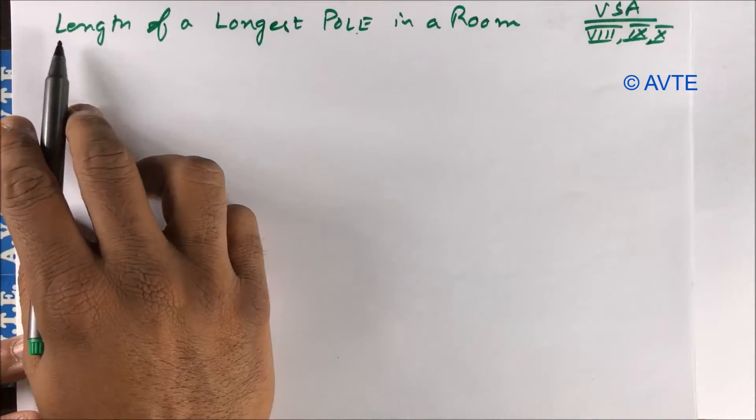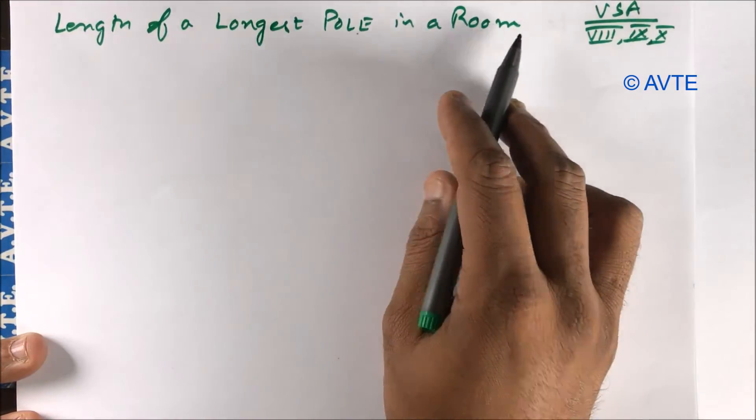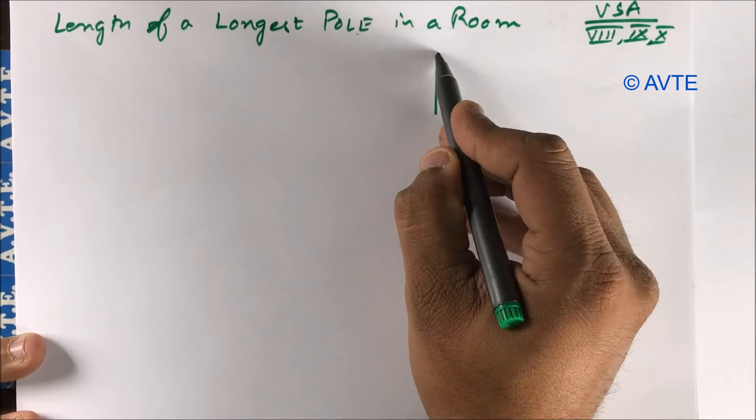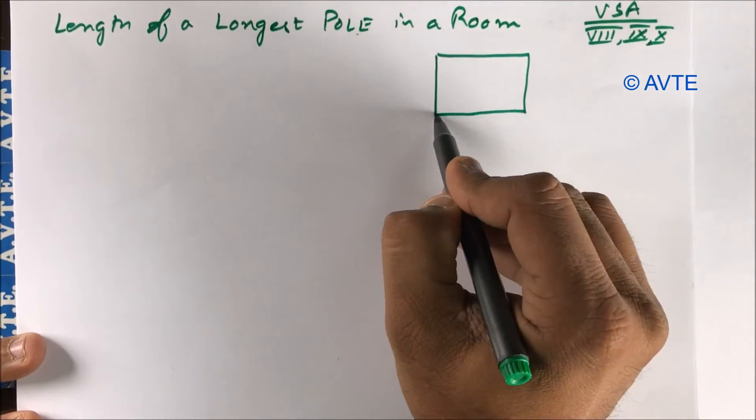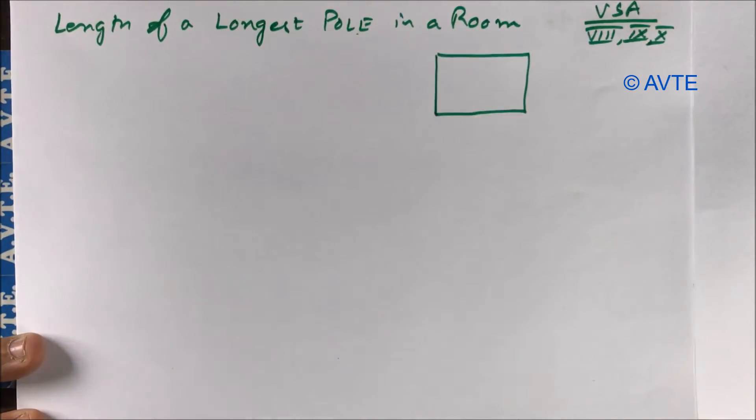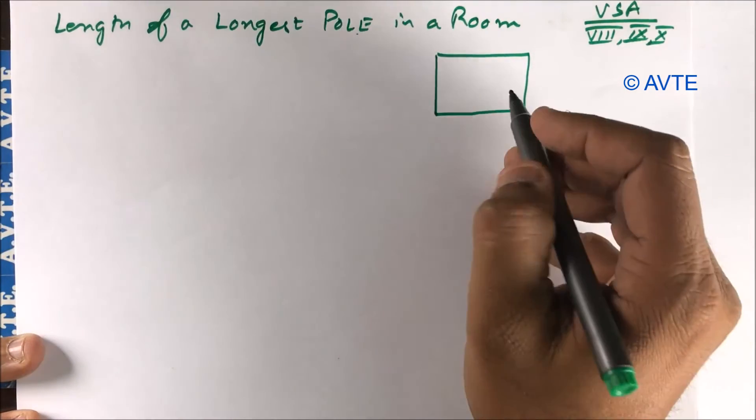So here we go, how to find the length of the longest pole in a room. Room means you have cuboid or cube, let's talk about cuboid first.